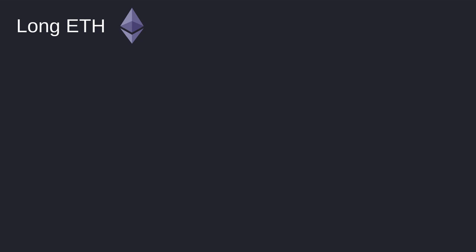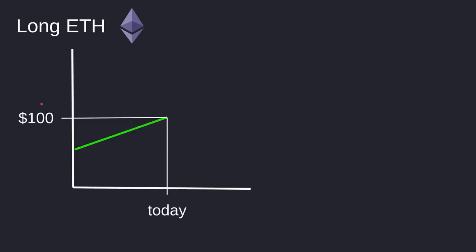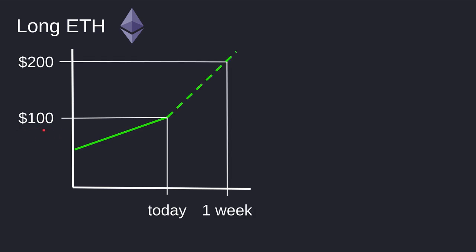When you bet that the price of ETH will go up in the future, this is called long ETH. Let's see how you can potentially earn more ETH by betting that the price of ETH is going up. Let's say that the price of ETH today is 100, and one week from now I predict that the price of ETH will be around 200. With this prediction, how can I gain more ETH in the future?